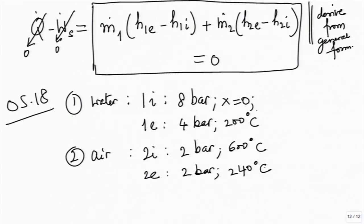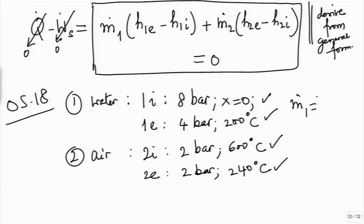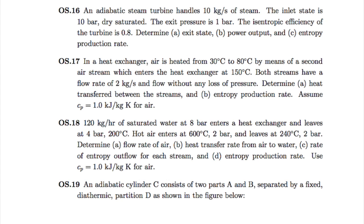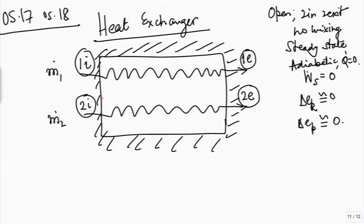You can determine h_i and h_e for stream 1, and h_i and h_e for stream 2. m_dot_1 is given as 120 kg per hour. From the heat exchanger equation, the only unknown remaining to be calculated is m_dot_2, which you can now calculate. For the heat transfer rate from air to water, you need to devise a control volume containing only the air side or only the water side.